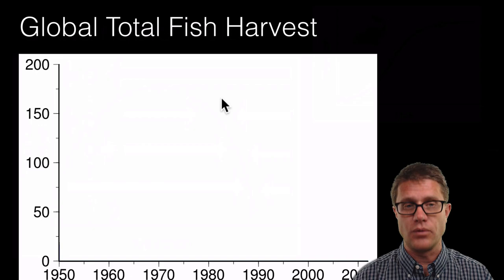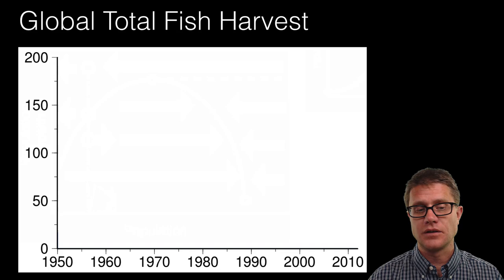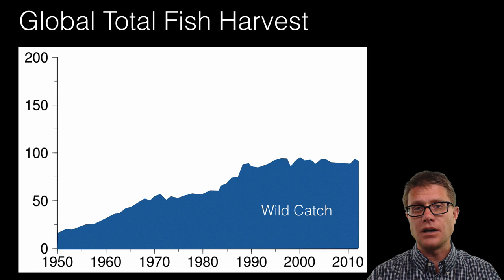And so let us look at what has happened to the planet. So if we look at global total fish harvest from 1950 to 2010, you can see that it is actually leveled off. So are we going to have problems into the future? For sure.